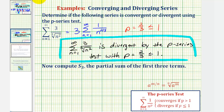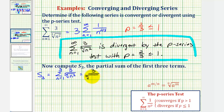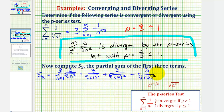Next we're asked to find the partial sum s sub three. So s sub three would be equal to the summation from n equals one to three of three divided by the cube root of n squared. If you only need a decimal approximation, we can go to the calculator now, but I'm going to show how to find this sum as well as rationalize the denominator to find the exact partial sum.